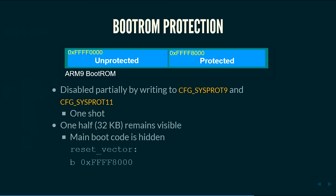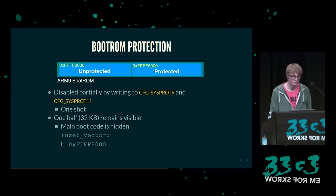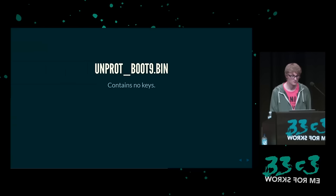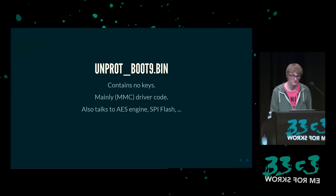Wenn man sich den Reset-Vektor anschaut, springt er direkt in den geschützten Teil des Bootroms — man bekommt also nicht wirklich raus, was passiert wenn die 3DS startet. Aber man kann sich den ungeschützten Bootrom-Code anschauen — vielleicht finden wir einen Bug darin. Da sind keine Schlüssel im ungeschützten Teil — alle Schlüssel sind im geschützten Teil. Es ist eine ganze Menge Treiber-Code drin: spricht zu ein paar Hardware-Sachen, zum Flash, zur AES-Engine, zum SPI-Flash — was recht interessant ist, weil das ein sehr kleiner Chip ist, der auf dem Wi-Fi-Socket gelötet ist und für Wi-Fi-Einstellungen nützlich ist. Da drinne ist auch der ARM-Exception-Vector-Table.